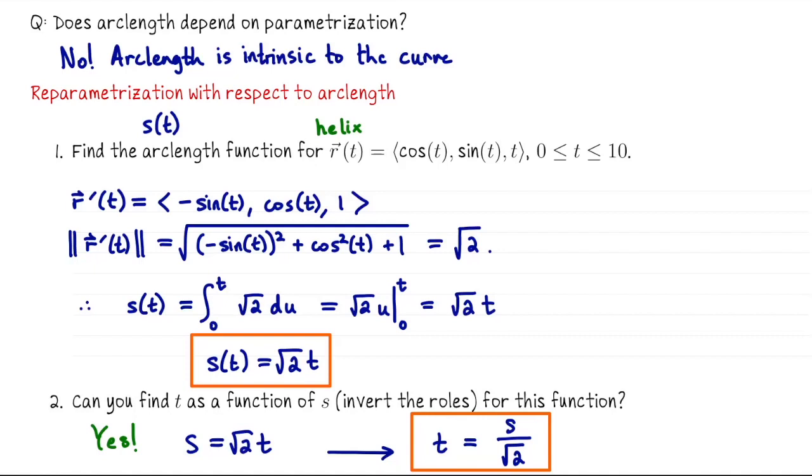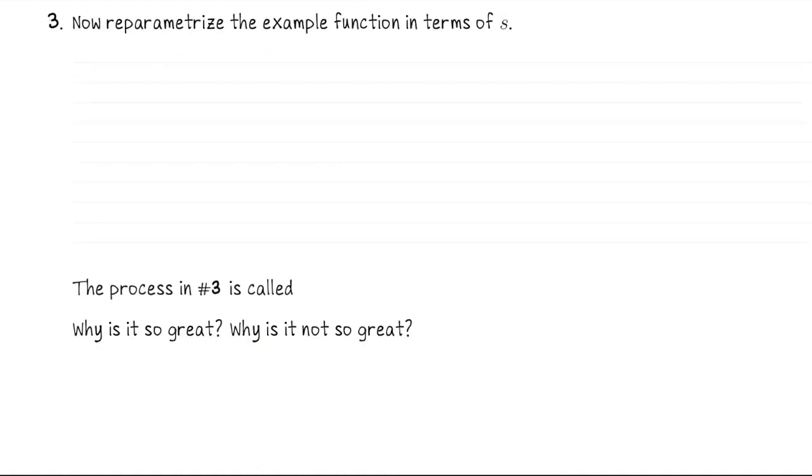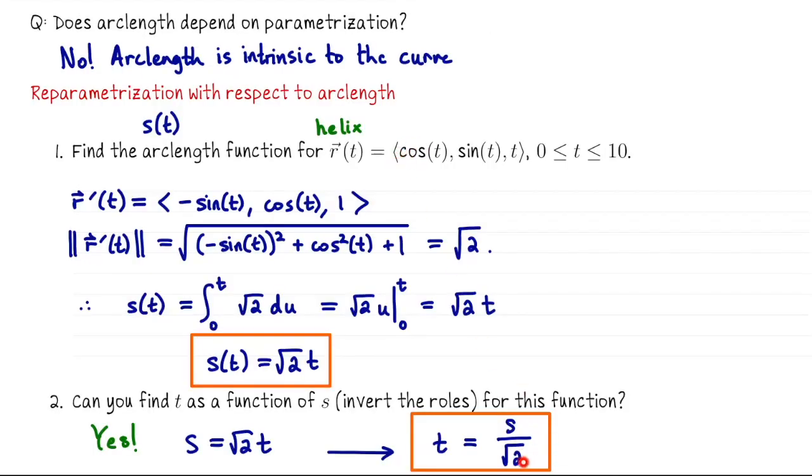Let's move on to the third step in this process, it's a three step process. So we found the arc length function, we inverted it to solve for t in terms of s, and the last step is to reparametrize our original parametrization, replacing t with its expression for s. So what I mean by that is let's have r sub 1 of s be r of t of s, and that's going to be cosine of s over the square root of 2. So I'm going to go to my original parametrization, and everywhere I have t, I'm going to plug in s over the square root of 2. So cosine s over the square root of 2, sine s over the square root of 2, s over the square root of 2.